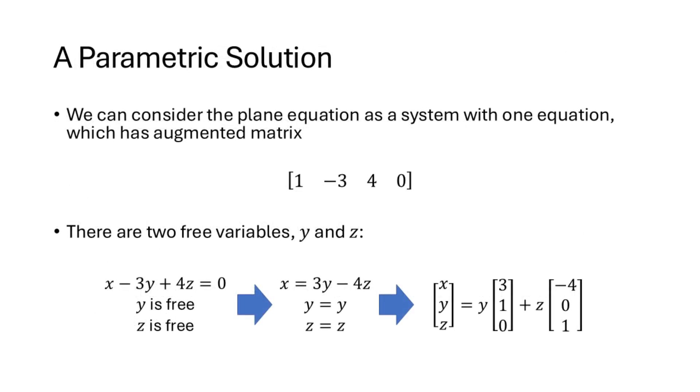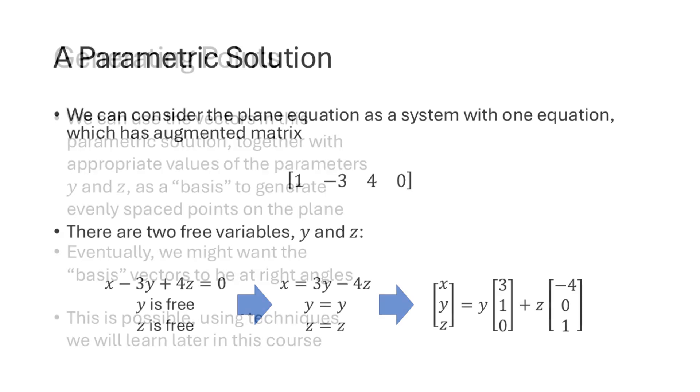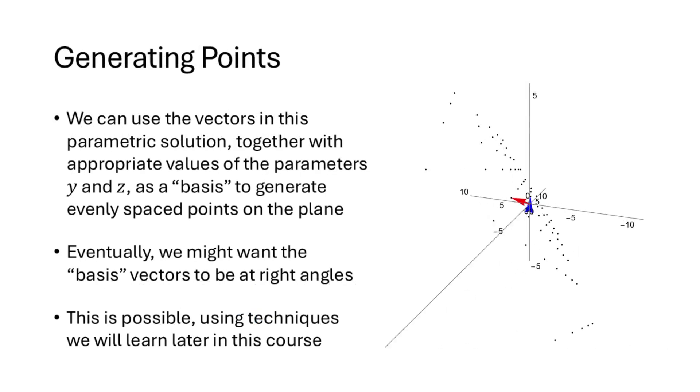And so we consider this single equation as a system of equations. We set up and row reduce our matrix, but there's not much row reducing to do here. This one row matrix is already in reduced echelon form. We write our solution in parametric vector form, and as before we get a solution that looks like this. Now we can generate points on our plane by computing linear combinations of those two vectors. We call that a basis for our solution set. And as you can see in the animation here, the points are evenly spaced, but skewed. The points are skewed because the two vectors had a wide angle in between them. And so what we might ultimately want is for our basis vectors to be equal length and at right angles to each other. And this is possible using some techniques that we'll learn later in this course.